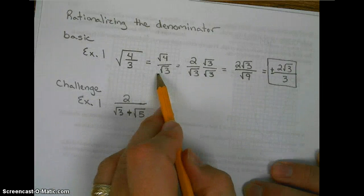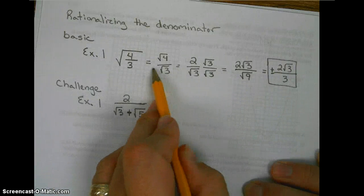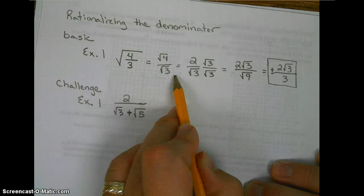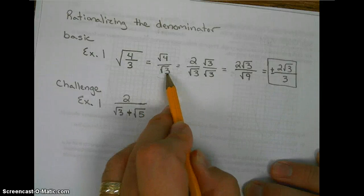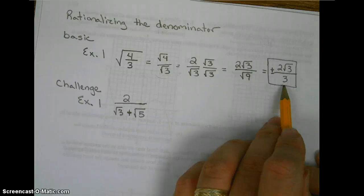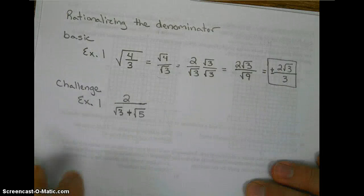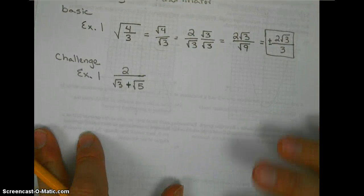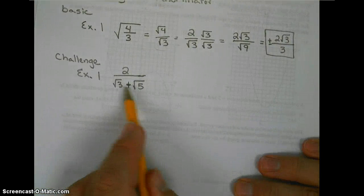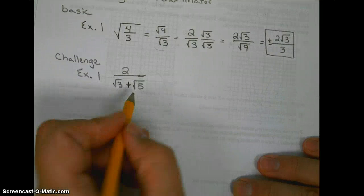Rationalizing the denominator makes the denominator get rid of the radical. Notice that our answer does not have a radical in the denominator. Challenge problem: this time we have two radicals that we need to get rid of.